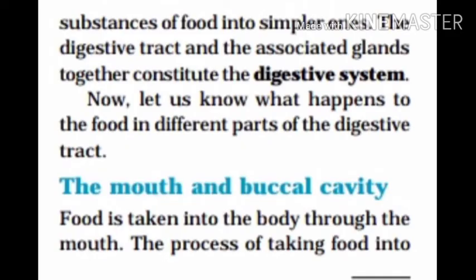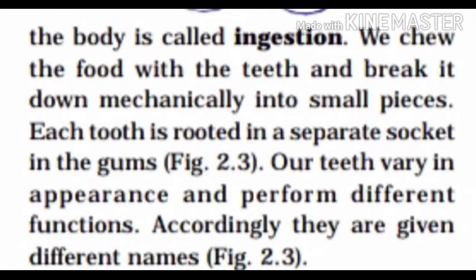Digestive juices convert the complex substances of food into simpler ones. The digestive tract and the associated glands together constitute the digestive system. Now let us know what happens to the food in different parts of the digestive tract. Food is taken into the body through the mouth. The process of taking food into the body is called ingestion.